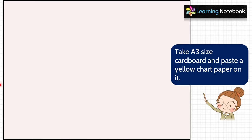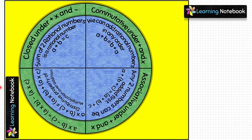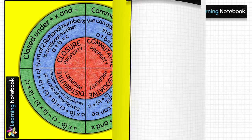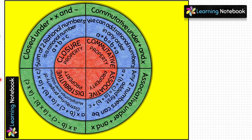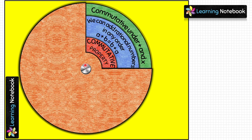Take an A3 size cardboard and paste a yellow chart paper on it. Place the three circles on top of each other on this cardboard, then place the orange circle on top. Match the centers of all four circles. Make a small hole in the center of all four circles and the cardboard, then screw the nut and bolt through the holes.